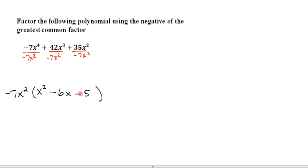Negative 7x squared times negative 5. Well negative times negative is positive. 7 times 5 is 35. x squared, yep, checks out. So that's the way you factor out the negative of the GCF.